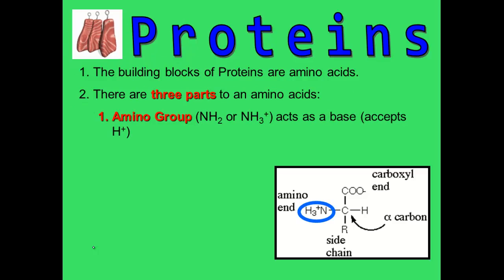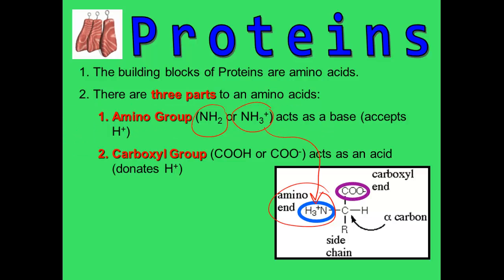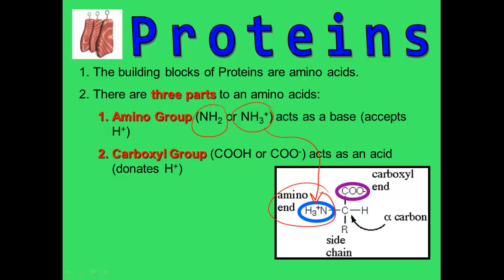Amino acids have three parts. The first part is the amino end — you'll see it appear as NH2 or NH3+. The second group is the carboxyl group, which you should remember from basic chemistry. The carboxyl group will appear as COO- or COOH.